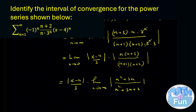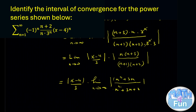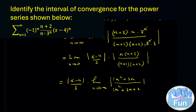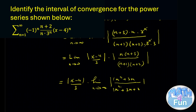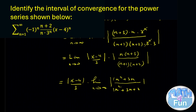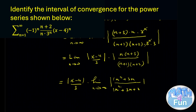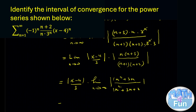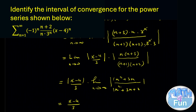Why? Because the coefficient of the highest power term n squared is 1 in both numerator and denominator, so it equals 1 over 1, which is 1. We can ignore that entire limit expression — it equals 1 — so we're left with the absolute value of x minus 4 over 3.